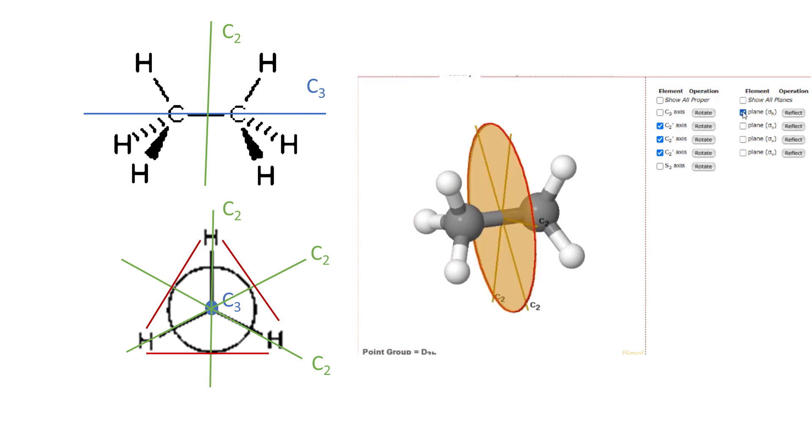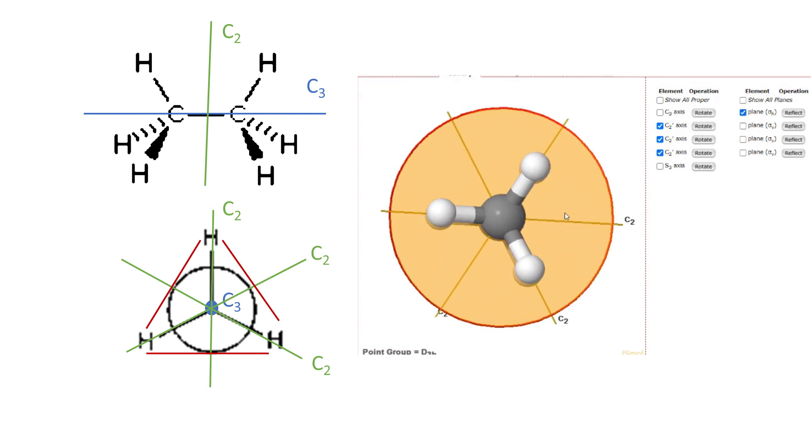Next example. We will take ethane, eclipsed and staggered. None of them, obviously, is a special case, but if you draw the structures from this perspective, it's essentially a Newman projection, then you'll be able to see that in both cases the main axis is C3. Eclipsed ethane can be simplified to two eclipsed triangles. You can immediately realize that there will be three C2 axes perpendicular to the main axis, and there is sigma H. So the group is also, as in previous example, D3H.